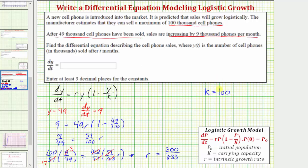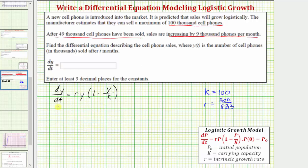So now we know k is 100, and r equals 300 divided by 833. We can now write the differential equation dy dt. dy dt equals r, which is 300 divided by 833, times y times the quantity 1 minus y divided by k, where k is 100.